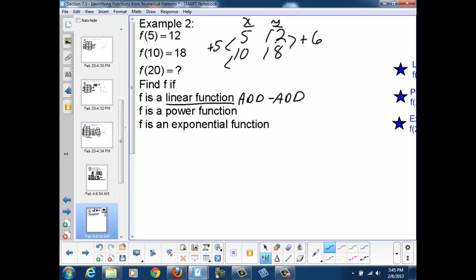Now, if I continue to apply that pattern, I can establish new data points. So if I add another 5, I'll end up at 15. And over here I would add 6, so I would end up at 24. If I repeat that process and add 5 again, I end up at 20. And if I add 6, I'll end up at 30. So if f is a linear function, f of 20 is 30.